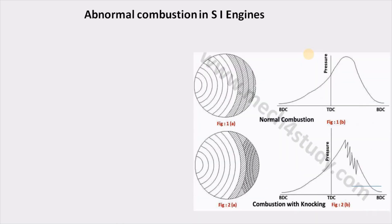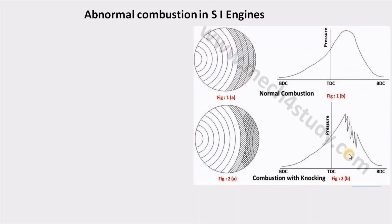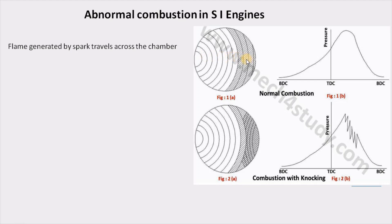Now let us see what abnormal combustion in SI engines is. In normal combustion, a homogeneous mixture is supplied to the combustion chamber and the spark plug located in this region forms a nucleus, which develops into a flame front that travels throughout the combustion chamber away from the spark plug. The flame front is that particular boundary — on one side is the unburned mixture and on the other side is the burned mixture.